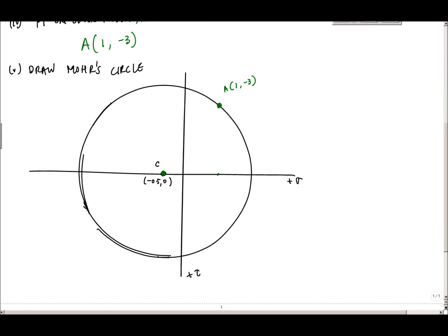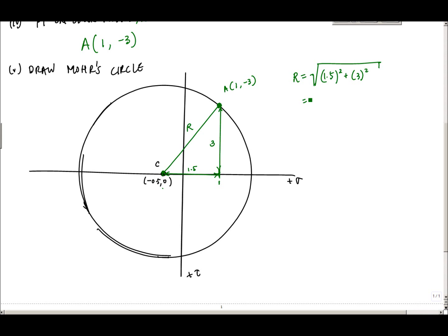One of the most important things you need is the radius of the circle. The radius is the line from the center to Point A. We know this point is at sigma equals 1, so the horizontal distance from the center to Point A is 1.5, and the vertical distance is 3. The radius is therefore the square root of 1.5 squared plus 3 squared, which comes out to 3.35 ksi.